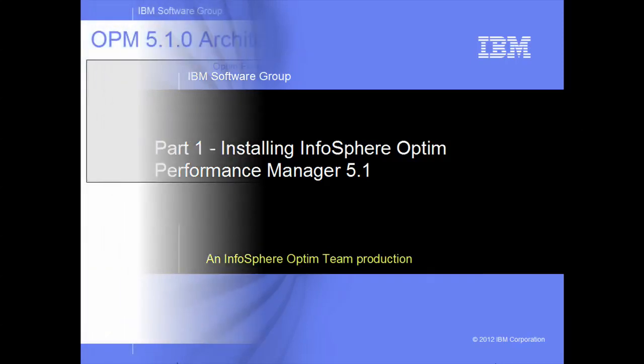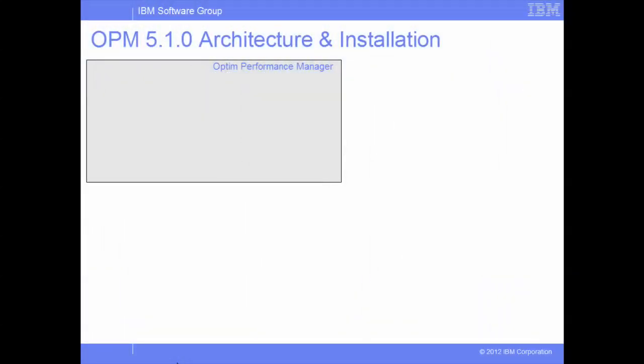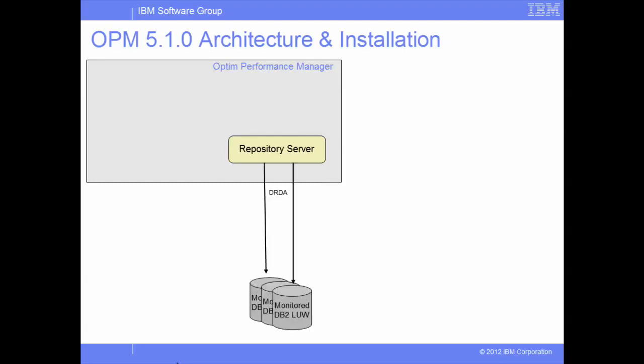Before getting into the install process, let's quickly review the architecture of the product. Key components of Infosphere Optum Performance Manager include the repository server, which connects to the monitored DB2 databases and uses monitoring metrics table functions to collect in-memory metrics for DB2 version 9.7 and above databases, or snapshot commands for DB2 version 9.5 and below databases. The server also uses DB2 event monitors to collect database performance data and stores all collected data in its repository database.